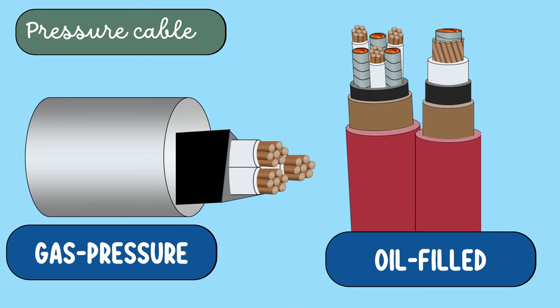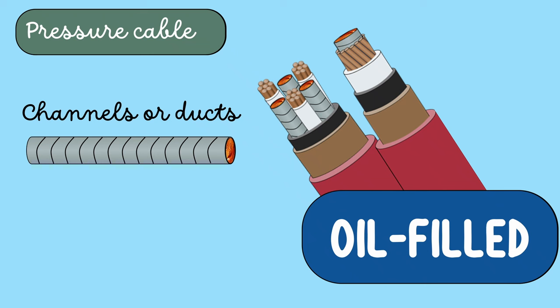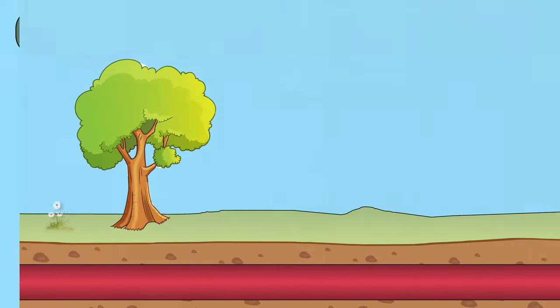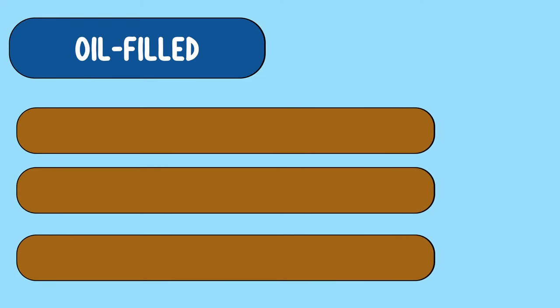Let's first concentrate on this oil-filled cable. Here, channels or ducts are provided in the cable for oil circulation. The oil is constantly supplied to the channel by means of external reservoirs placed at suitable distances along the cable route. The oil is maintained under pressure by these reservoirs. The oil-filled cables are classified into three types depending on the location of the oil channel in the cable.